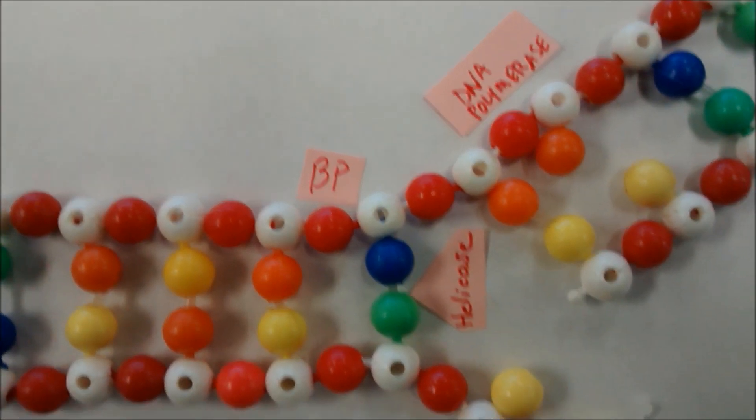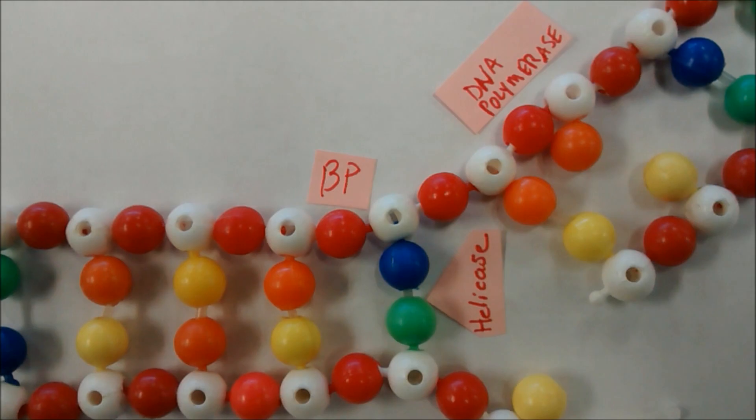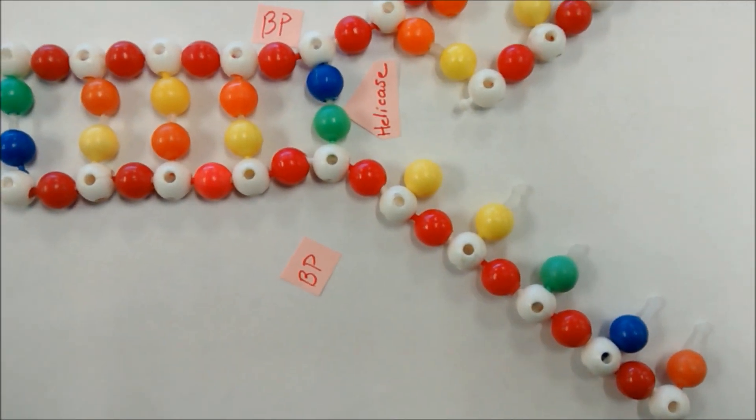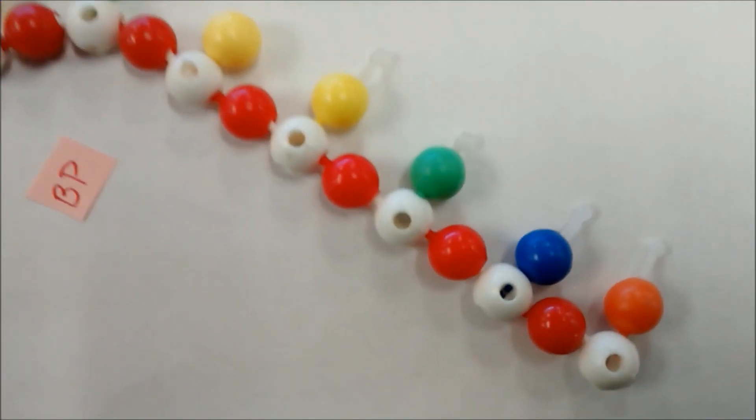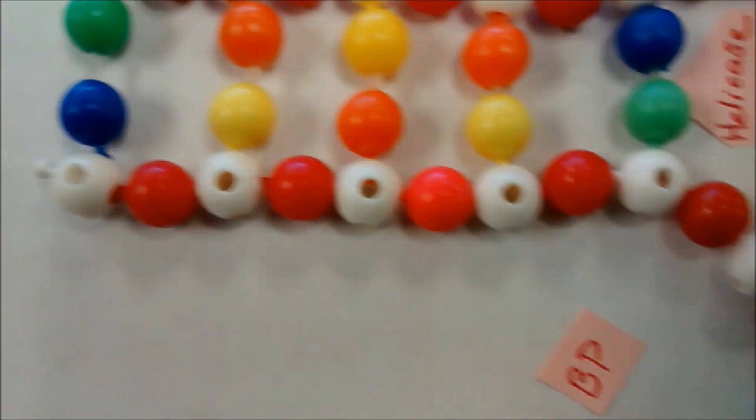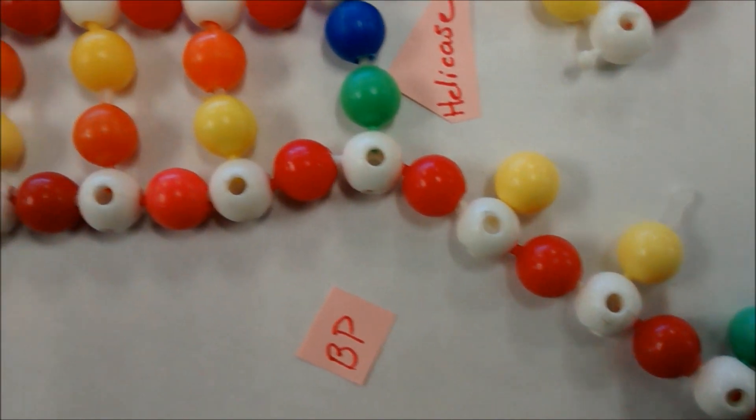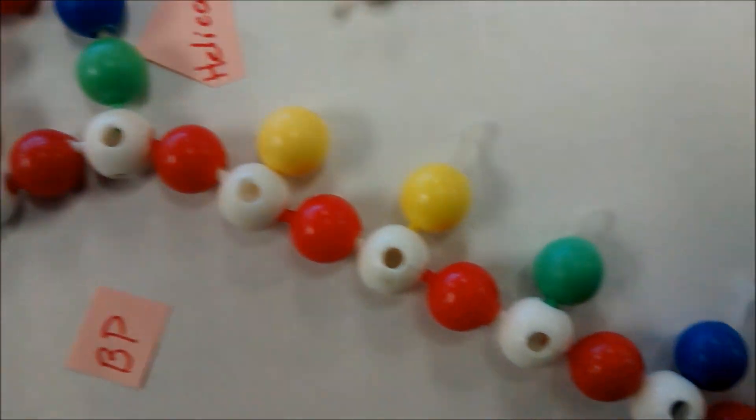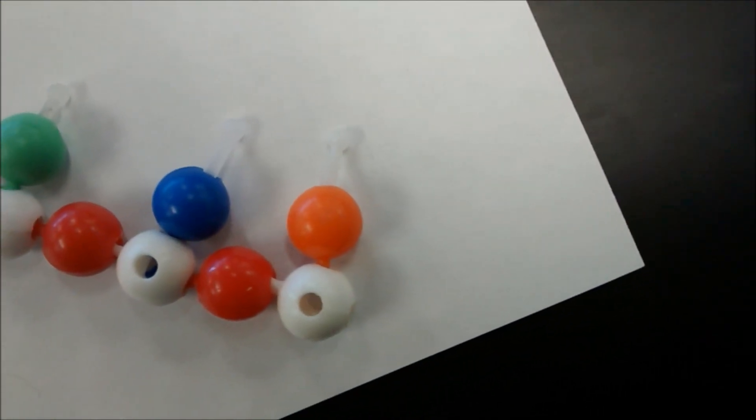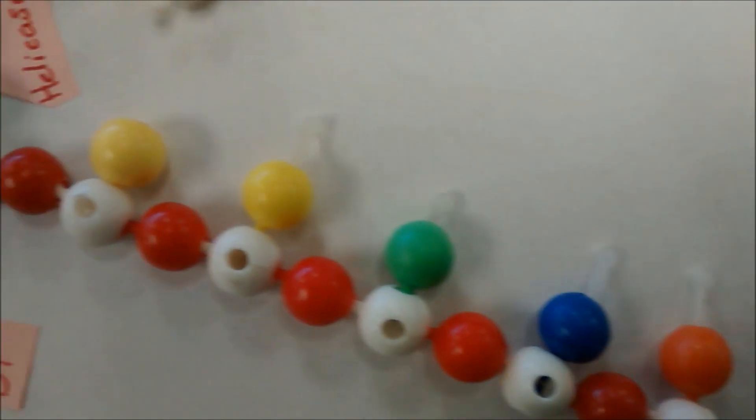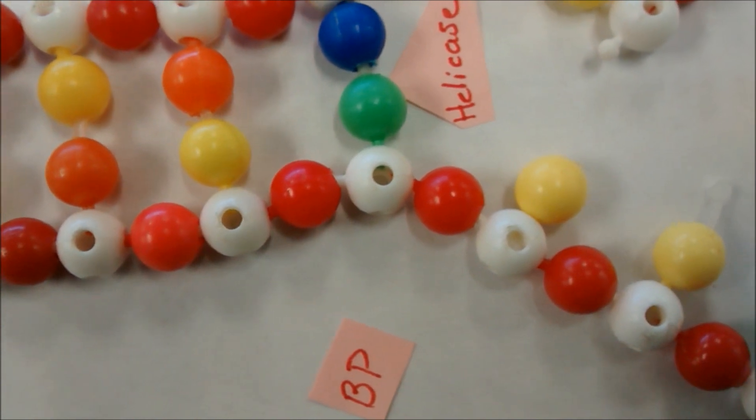All right, let's look at the other side, because it's not the same on both sides, as we know. So on this side, remember this is the five prime to three prime side. And we know the rule about DNA polymerase, that it has to work three prime to five prime. So we can't start here and just go down continuously the way we did on the other side.